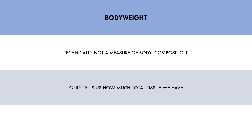However, body weight is definitely a useful tool when used in conjunction with other assessment methods. Body weight gives a general indicator of how much total tissue we have — it doesn't tell us what this is, but it tells us how much. We can then use other methods of assessment to give us more details about what this total weight is composed of. For example, we can compare our physique at the same body weight at different points in time, so we know we have the same amount of total tissue, but maybe we look bigger and leaner than we previously did. This would be a pretty good indicator that we have gained muscle mass and reduced body fat.